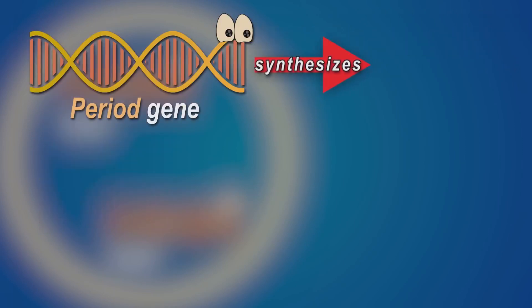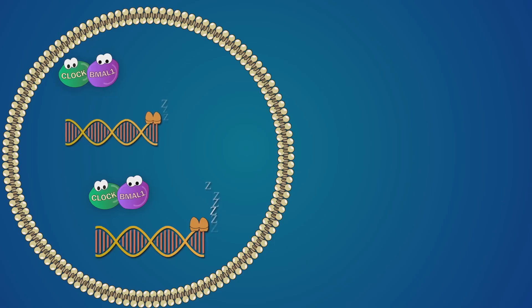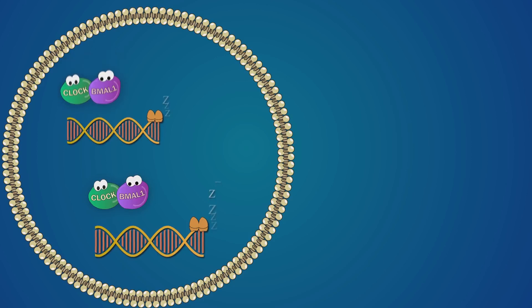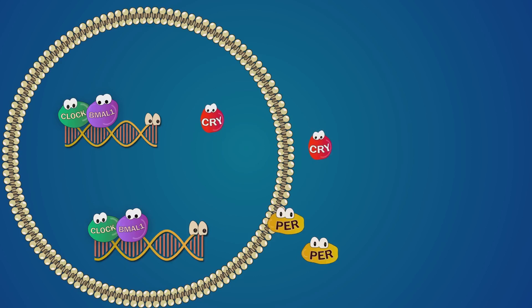The period gene is responsible for protein called per and cryptochrome makes one named cry. At 12 o'clock at night, clock and bmal1 bind to the e-box and consequently, per and cry begin to be formed and are collected in the cytoplasm.